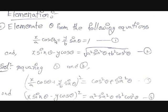No theta means you should not have any trigonometric ratios. First, let's see with an example. The first equation is: x/A·cosθ + y/B·sinθ = 1.